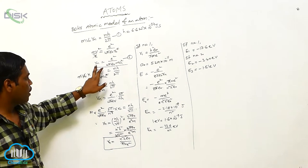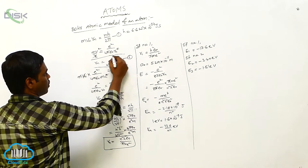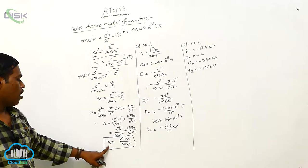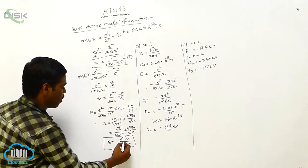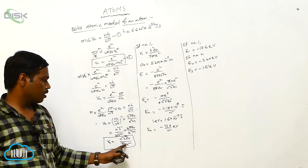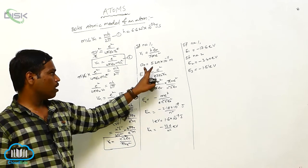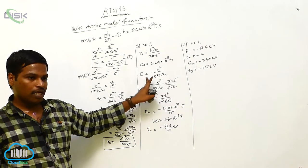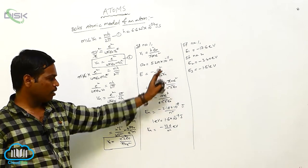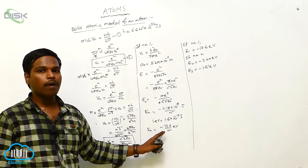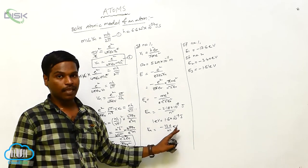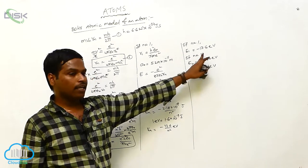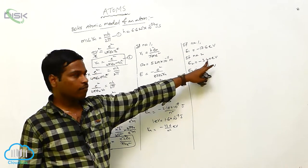From the Bohr atomic model, we get Rn = n² h² ε₀ / π m e². Substituting all values gives a₀ = 5.29 × 10⁻¹¹ meters as the Bohr radius. The energy En = −13.6 / n² electron volts, so E1 = −13.6 eV and E2 = −3.4 eV.